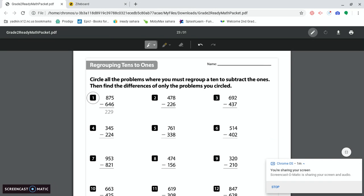Let's look at number one. If you look in the ones place, we've got five ones. Can we take away six? One, two, three, four, five. No, we can't. So that's why number one is circled. We have to go and regroup a ten.